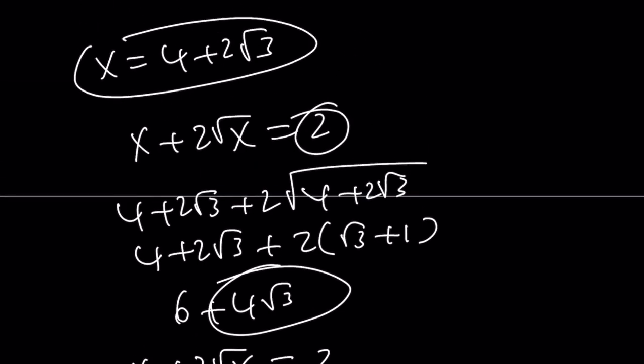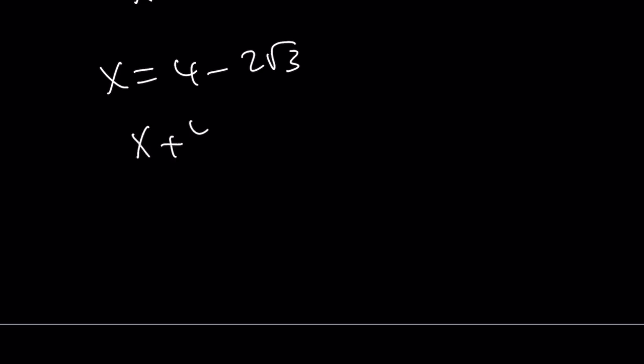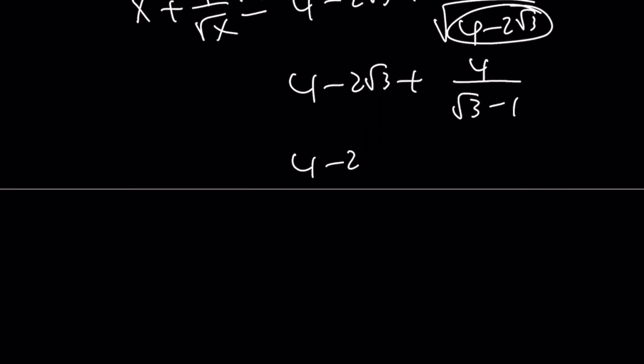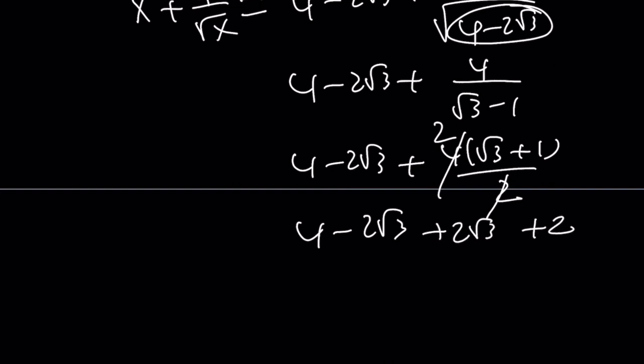Okay. So here's what we're going to do. Instead of using x equals 4 plus 2 root 3, we are going to use the other root, x equals 4 minus 2 root 3. If you introduce that into the expression x plus 4 over root x, you're going to get the following. 4 minus 2 root 3 plus 4 over the square root of 4 minus 2 root 3. 4 minus 2 root 3 plus 4 over root 3 minus 1. 4 minus 2 root 3 plus 4 times root 3 plus 1 over 2. Remember the story. And then we get 4 minus 2 root 3 plus 2 root 3 plus 2. 2 root 3s cancel out and we end up with 4 plus 2 which is equal to 6.